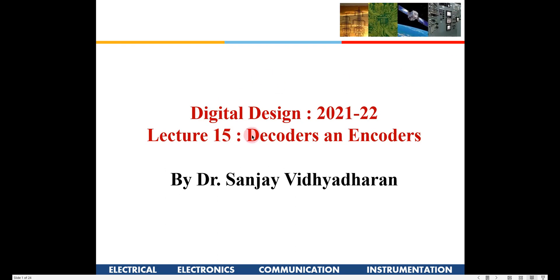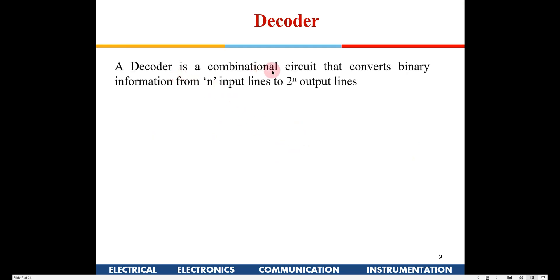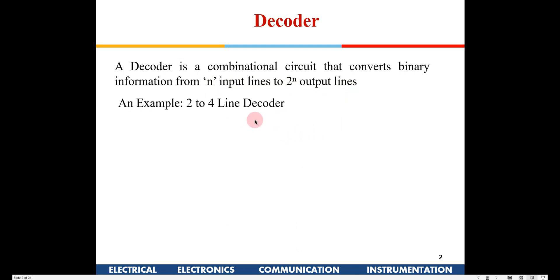Welcome everybody. In this class we are going to learn about decoders and encoders, and also how to implement boolean functions using decoders. A decoder is a combinational circuit — it has a few gates and no memory. It can have n inputs and a few outputs with no storage element. A decoder converts binary information from n input lines to 2^n output lines.